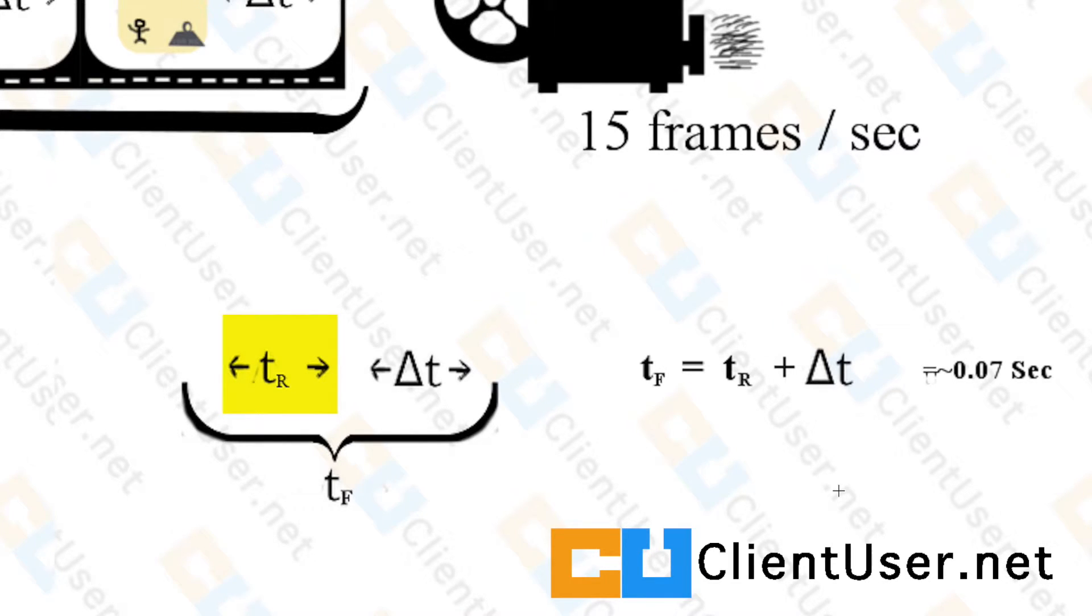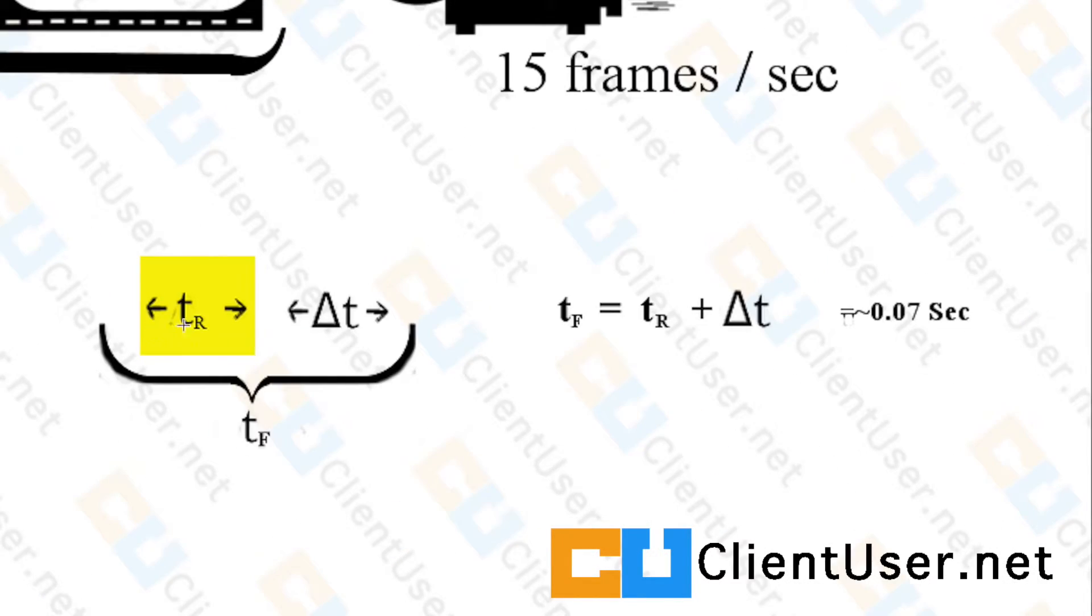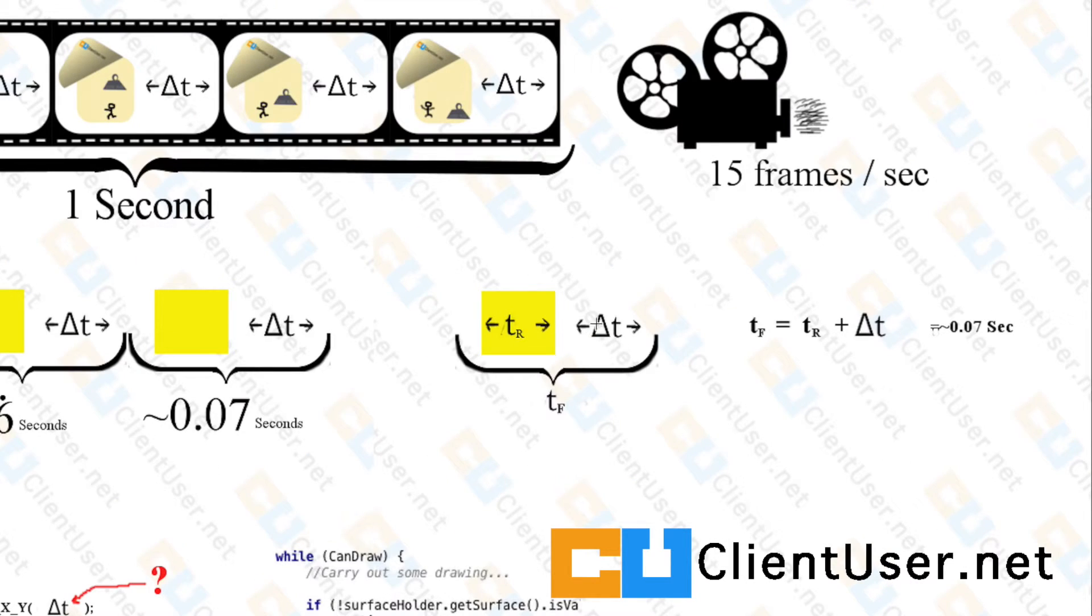So here we have the rendering portion and I've labeled that tr. Here's the gap you want to pause for, delta t, and the entire time is tf for frame time. And this is the equation you need to pay attention to: your total frame time is your render time plus delta t, and that's approximately 0.07 seconds. If we take this bracket and this film segment and we turn it on its side, it's actually our while loop from the animation tutorial.